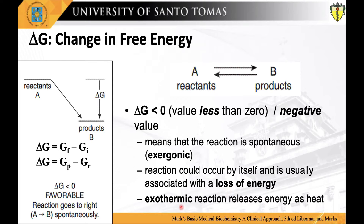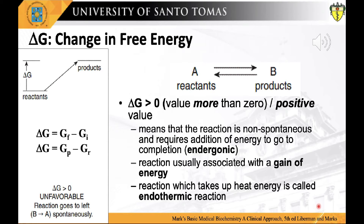On the other hand, this is an energy diagram of a reaction where the free energy level of the products is higher than that of the reactants. Thus, the change in free energy, or delta G, has a positive value. This means the reaction is non-spontaneous and requires addition of energy to go to completion. Therefore, this is an endergonic reaction where the products are associated with an increase in free energy. This reaction likewise takes up heat energy and is called an endothermic reaction.